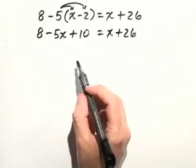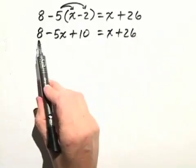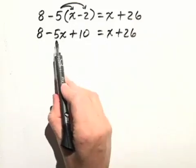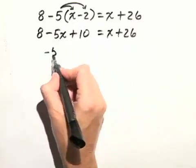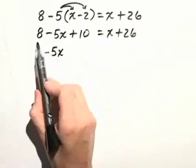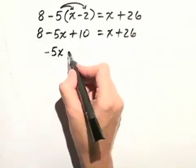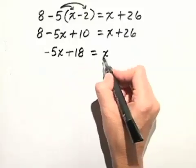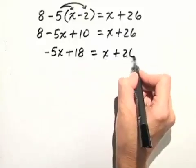Now before we go on, on the left hand side we have some constant terms that we can combine to simplify it. So first I have negative 5x, and then I'll combine the 8 and the 10 to get 18. That's equal to x plus 26.